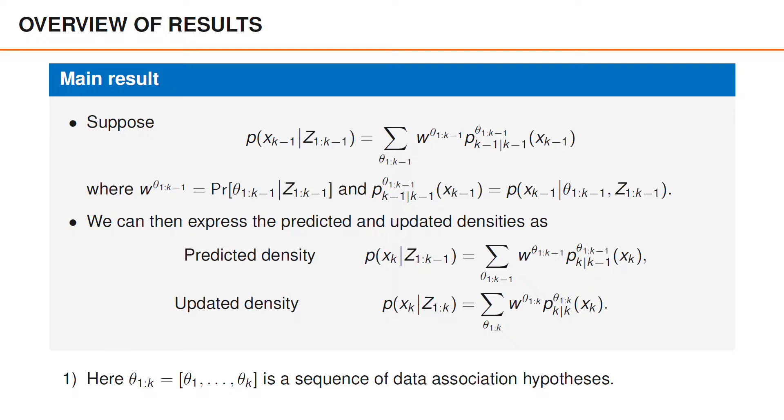One can show that the weight is the posterior probability of the data association sequence, whereas the density is the posterior of x_{k-1} given both the data and the data association sequence. However, we are not going to prove that they have this interpretation in this video. What we will show is that both the predicted density and the posterior at time k can be written on the same form.